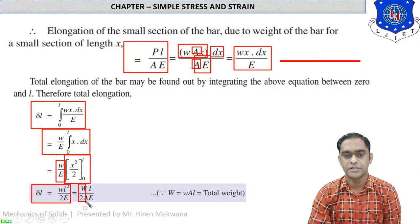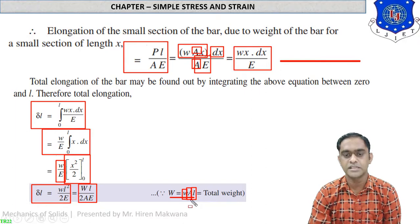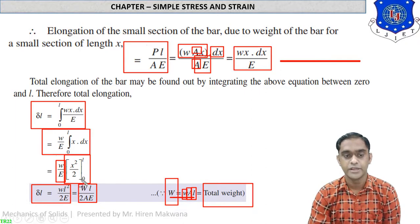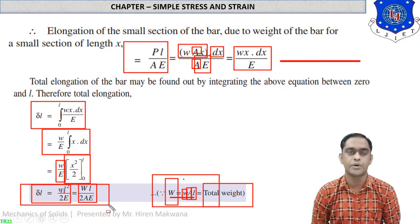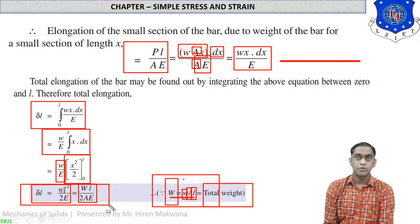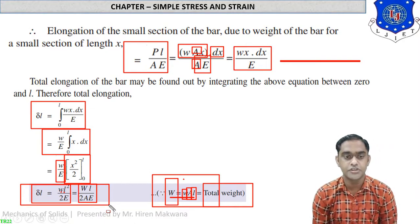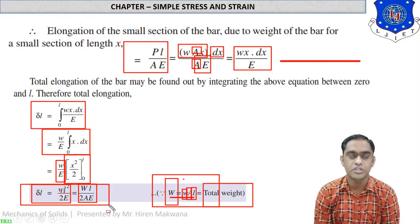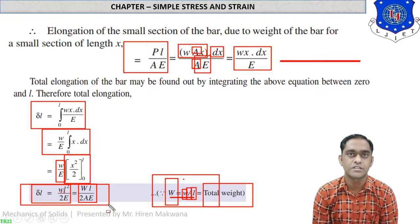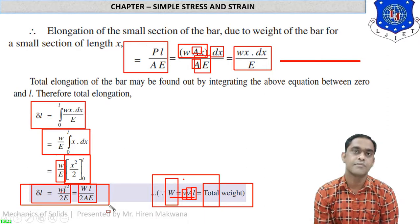So delta_l = wL² / (2E). Here w = specific weight, A = cross-sectional area, L = total length, so w × A × L = total weight W of the body. Replacing, we get delta_l = WL / (2AE), where W is the total weight of the body, L is the total length, A is the cross-sectional area, and E is the Young's modulus.